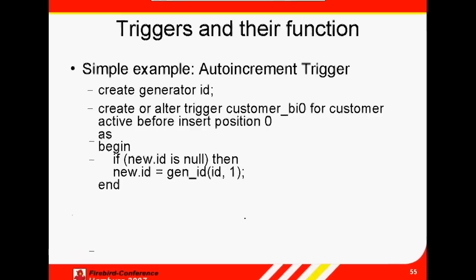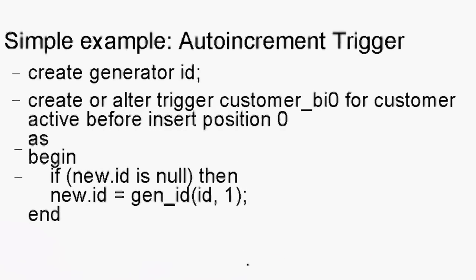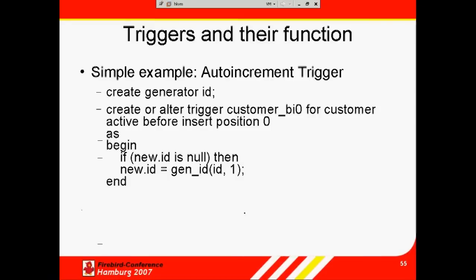Here's a simple example of an auto increment trigger. It creates a generator. CREATE OR ALTER — yes, this also works for triggers — ACTIVE BEFORE INSERT POSITION ZERO. I can define the trigger position in relation to other before insert triggers. Then it checks if the new value is null, that is, nothing has been entered, and if this is the case, it inserts a generator value.